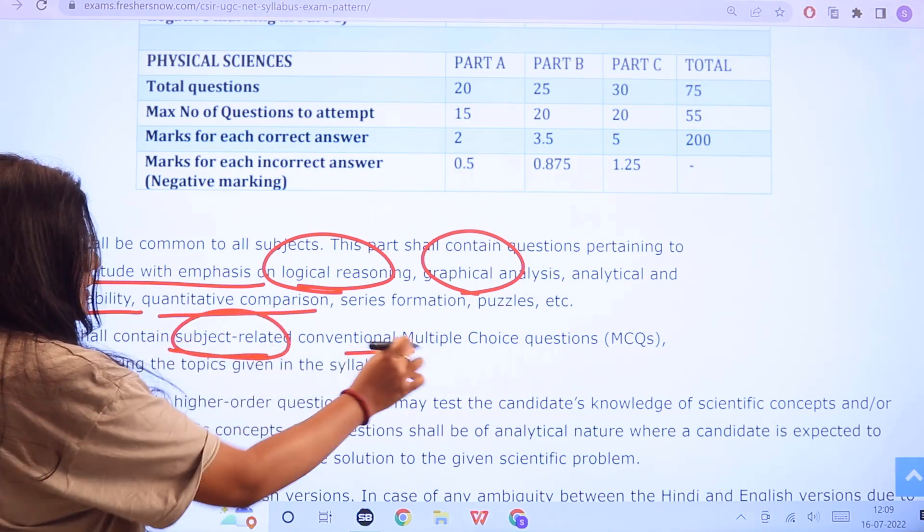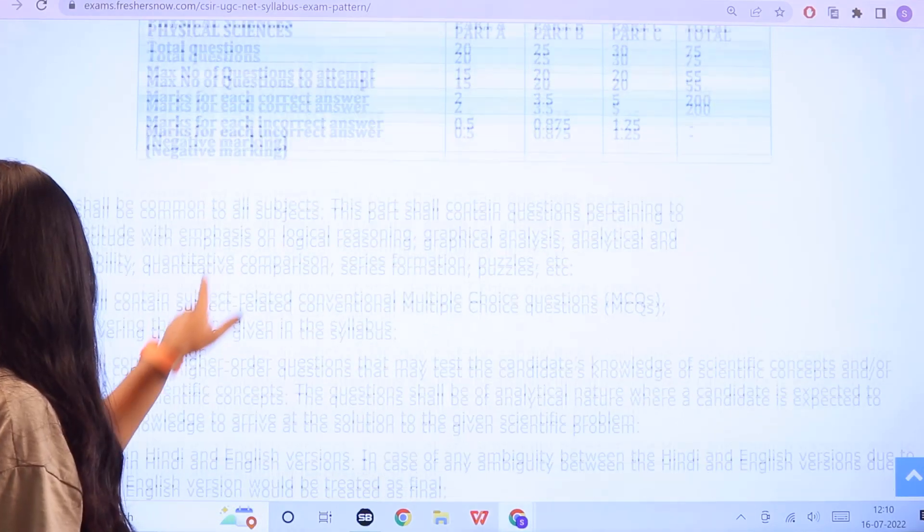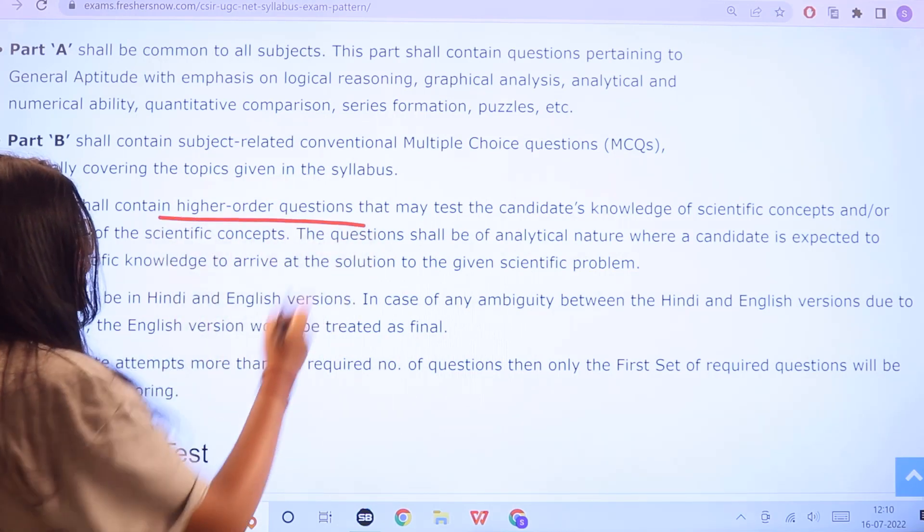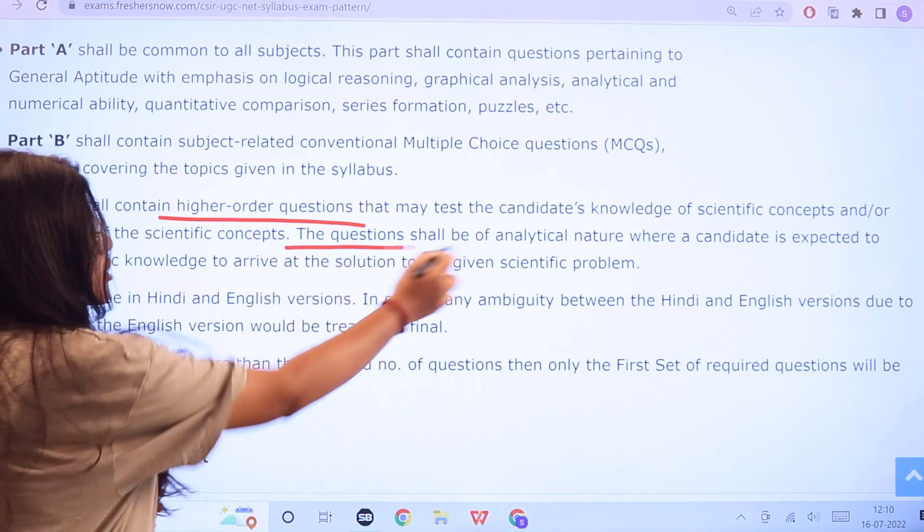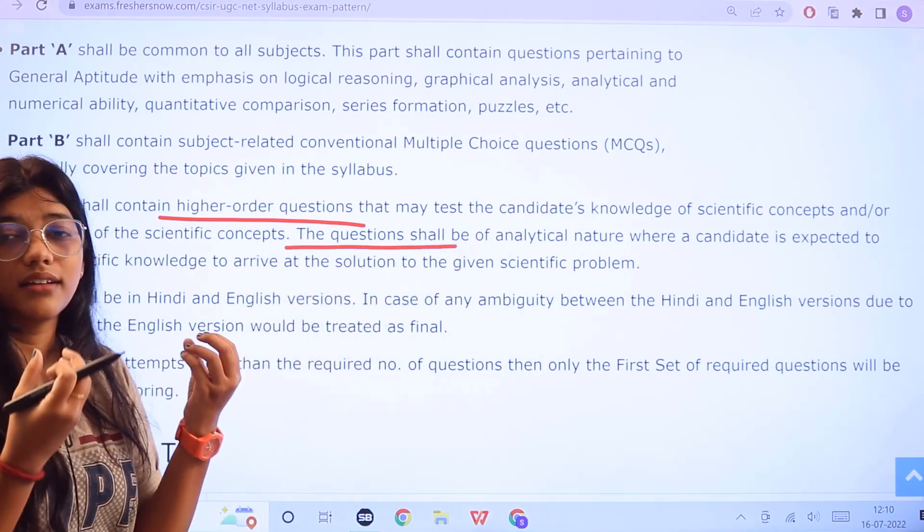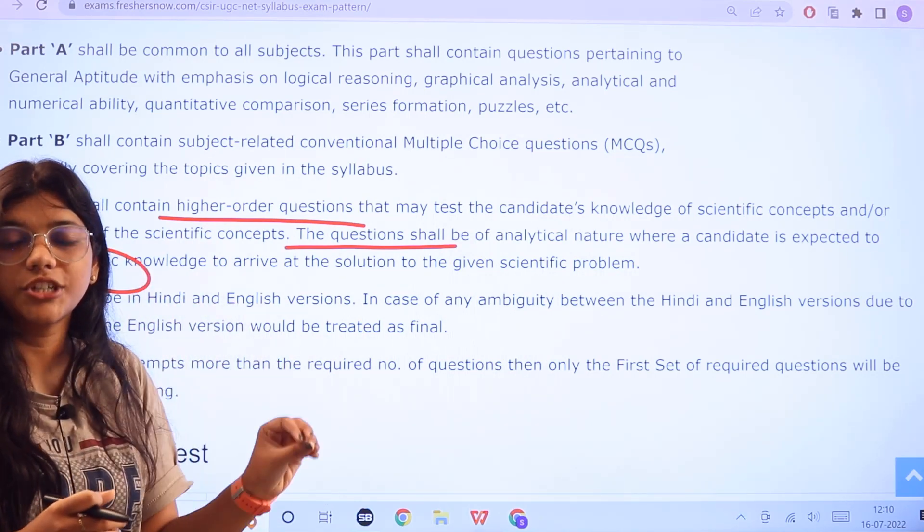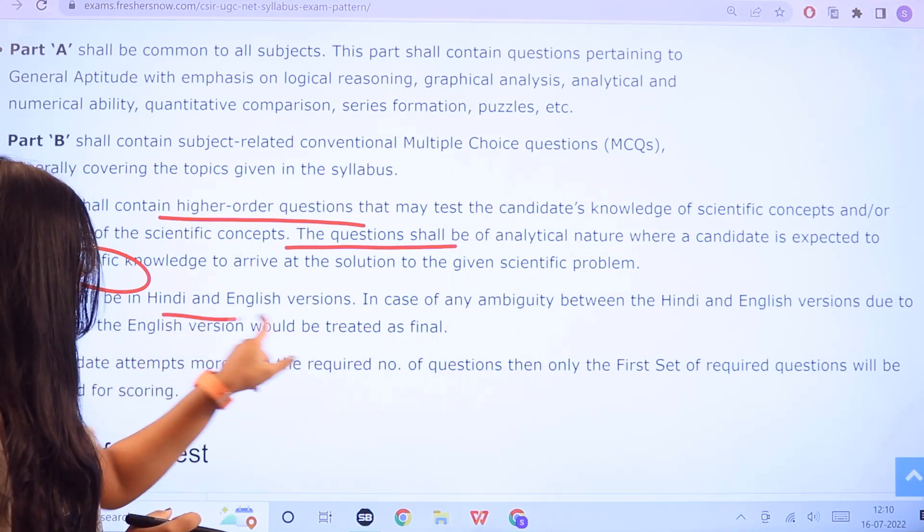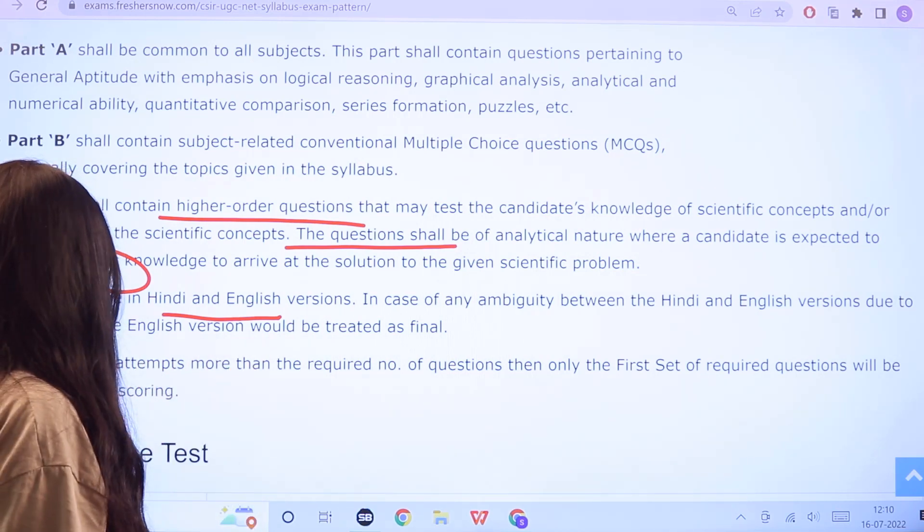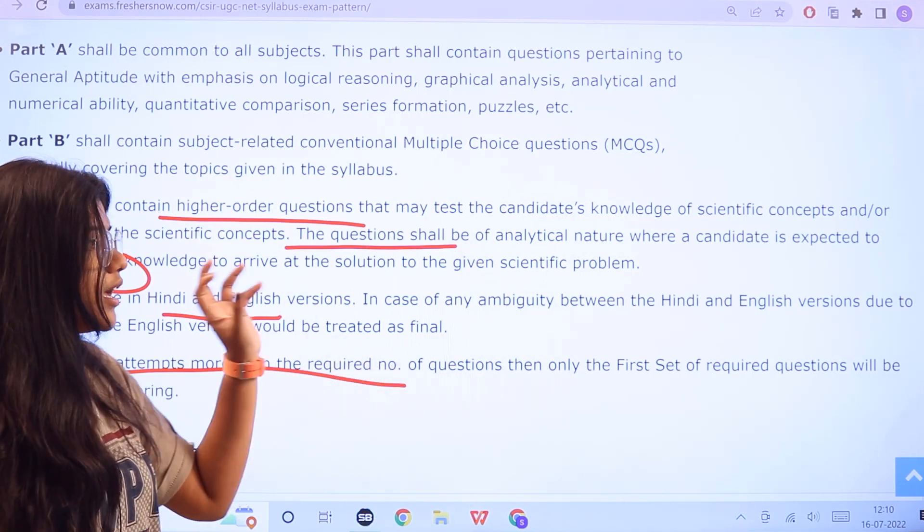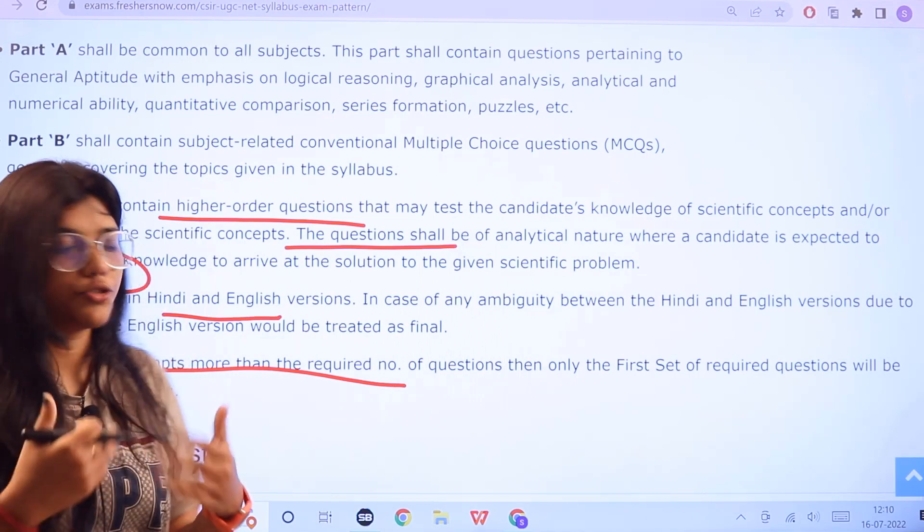Now part B would have subject related conventional multiple choice questions or MCQs, and for part C you have high order questions which would be testing your scientific knowledge concepts. The questions would be related to analytical based scientific questions and they would be actually looking into the application of your scientific knowledge. The more number of questions that you answer, you have to also be aware about the marking criteria that you are looking ahead.